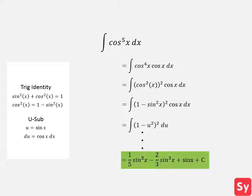We solve the integral and substitute back in sine of x. We finally get our answer: one-fifth times sine of x to the fifth minus two-thirds times sine of x cubed plus sine of x plus C. For a more in-depth solution, you can check out Symbolab.